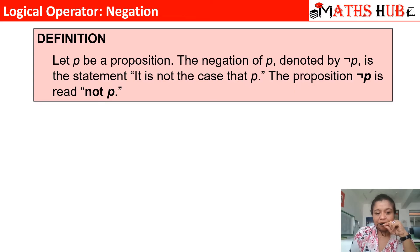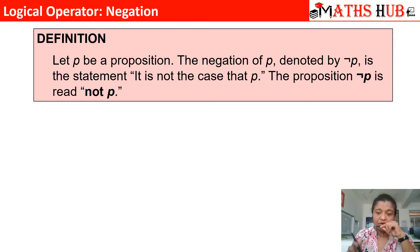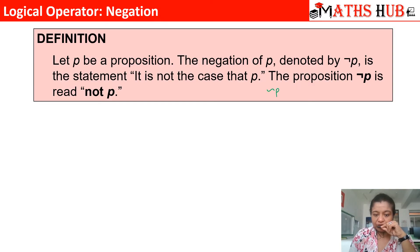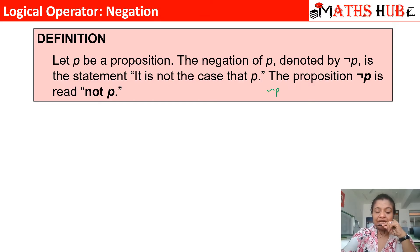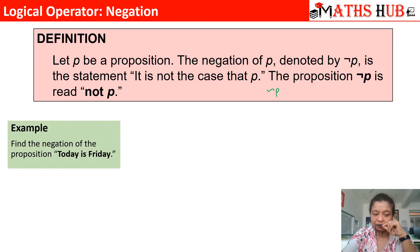The negation operator means that if we have proposition P, the negation of P means to write the opposite case — that means not that case that we are talking about. Negation is represented by this symbol, or in some books they also follow another symbol. Both symbols can be used. So whatever the proposition given to us, negation P would be 'not P'. The English meaning of negation is simply 'not P'.